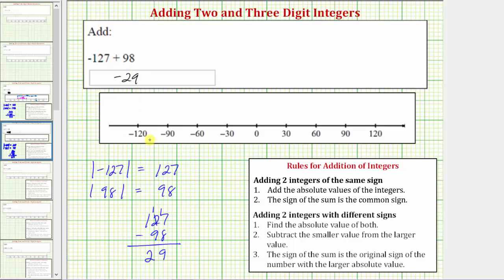Let's also take a look at this sum on the number line. So we'll first model negative 127 by starting at zero and moving left 127 units because we have negative 127.